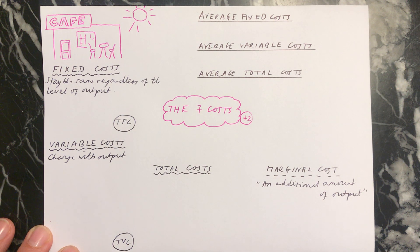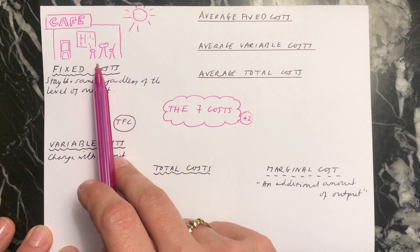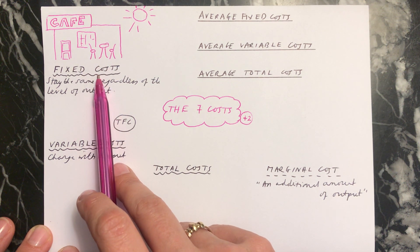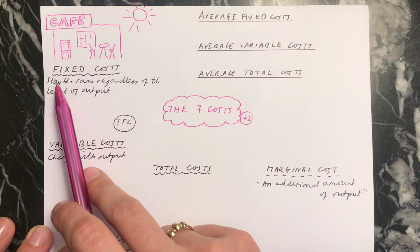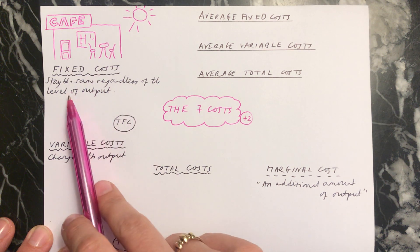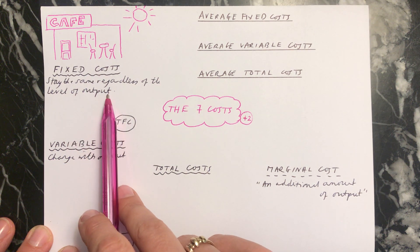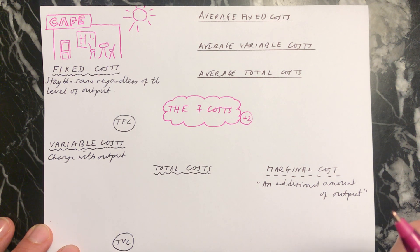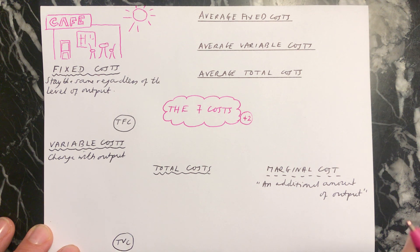Let's imagine that you have a cafe, and the cafe will face some fixed costs. These are costs which are going to stay the same regardless of the level of output. So it doesn't matter if you have one customer in your cafe or 100 customers — your fixed costs are always going to be the same.